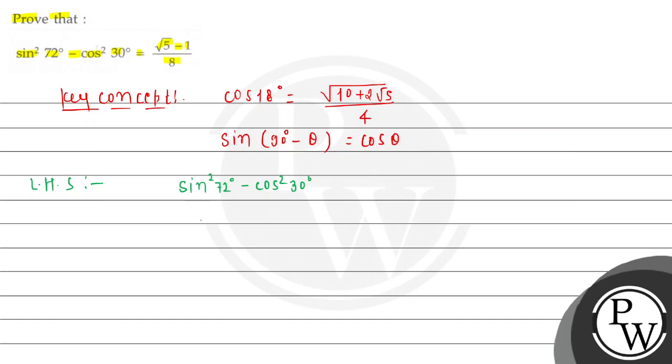In this case, what we'll do here: we can write sin 72° as 90° - 18°, and cos²30°.